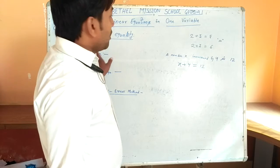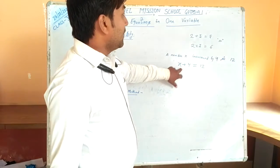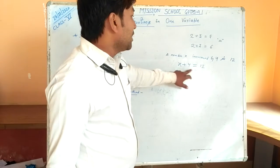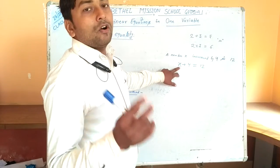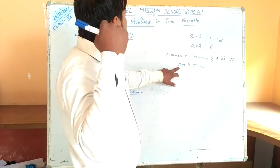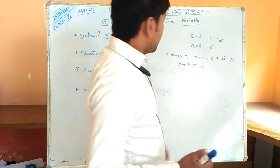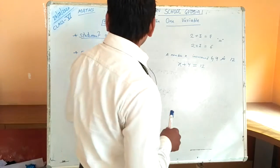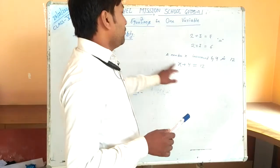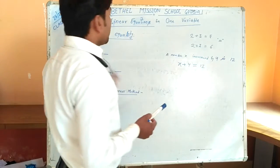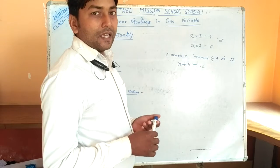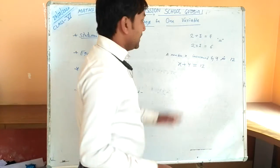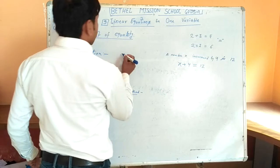When a statement of equality uses one or more unknown numbers, those unknown numbers are called variables, and the statement is called an equation. It may have one, two, or three variables, but here we are going to learn equations with one variable only.